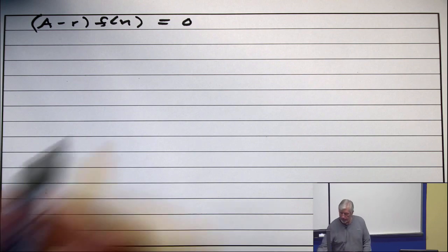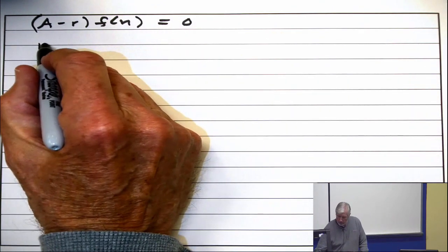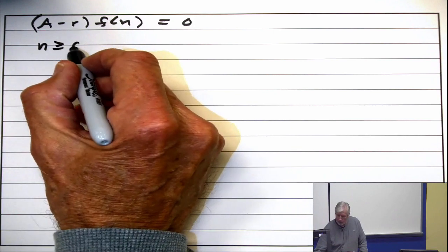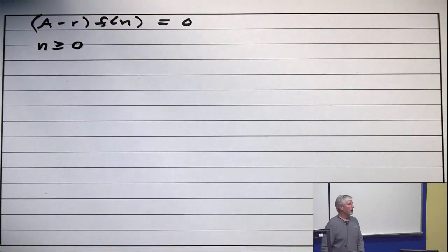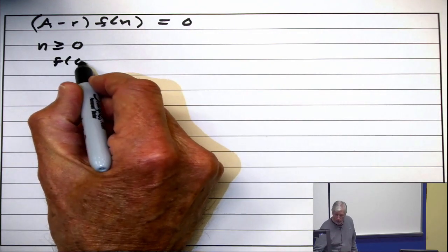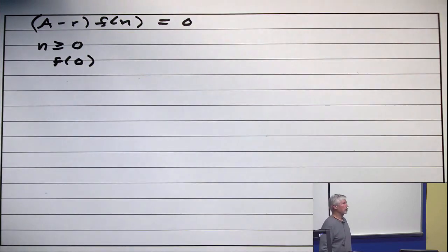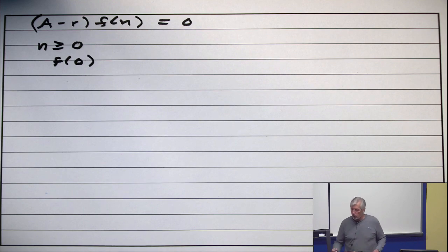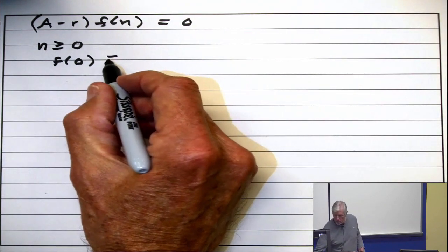We'll first start with the case that n ≥ 0. Calculate the value f(0). What is f(0)? That's some value, let's call it c.